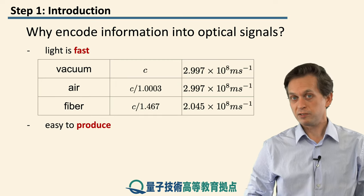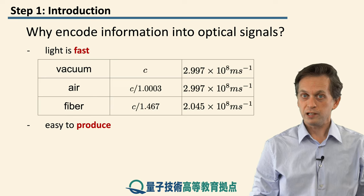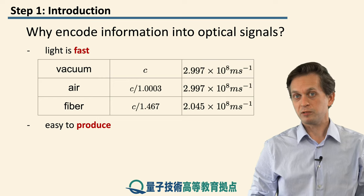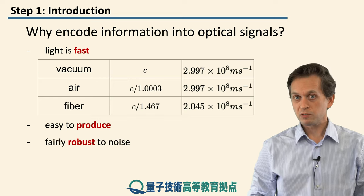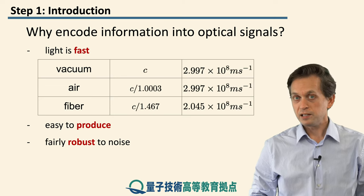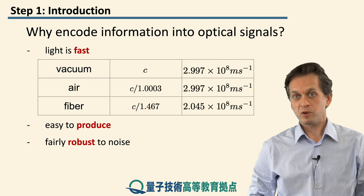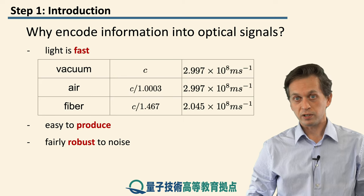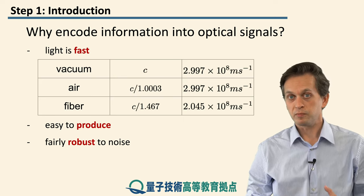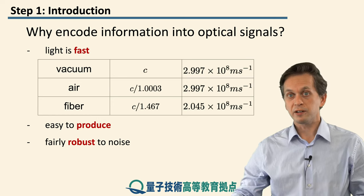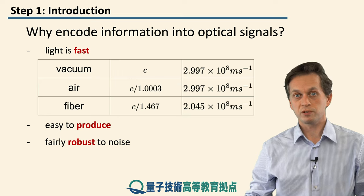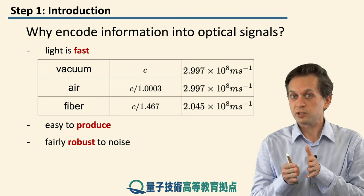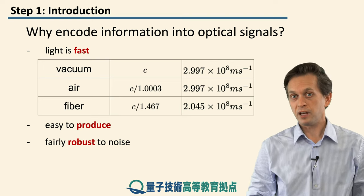Apart from being fast, light is also relatively easy to produce. In the early days, if you wanted light, you could just light a fire. Nowadays, of course, we just use lasers and send those laser signals down optical fibers. Also, light does not interact with other things that easily, and therefore it is robust to noise. For example, compare it with copper wires, where each wire carries electrons and electronic signals — these may create electric and magnetic fields that affect other wires, introducing noise. This is not the case in optical fibers, and you can generally pack these fibers very compactly without affecting any of the messages.